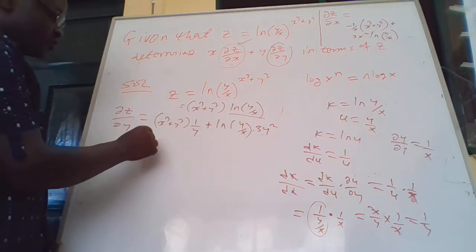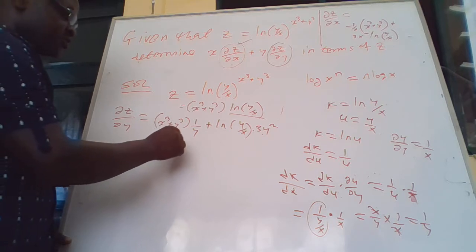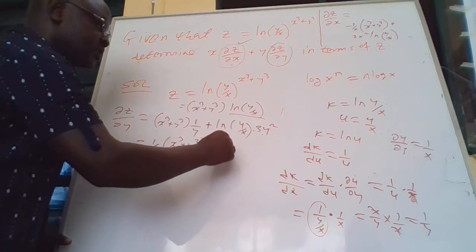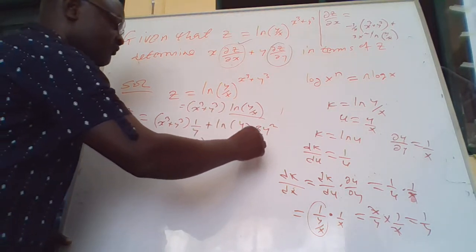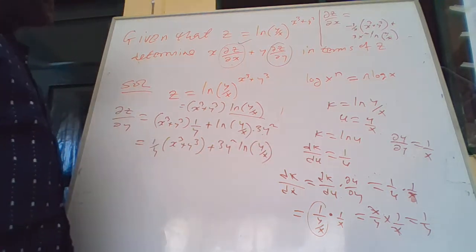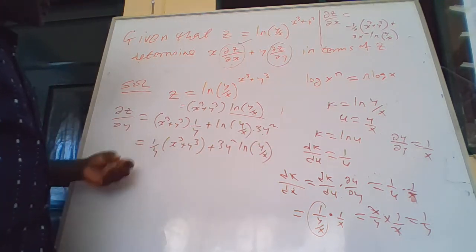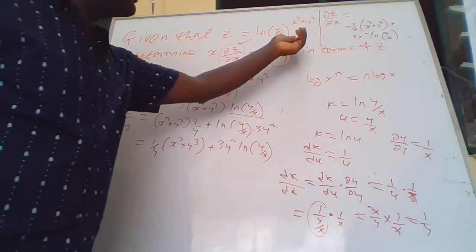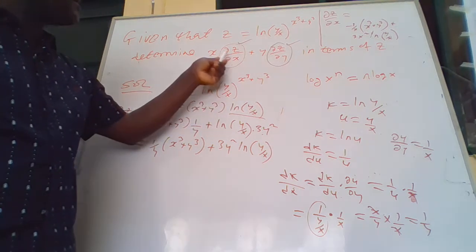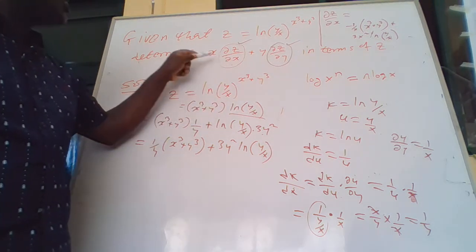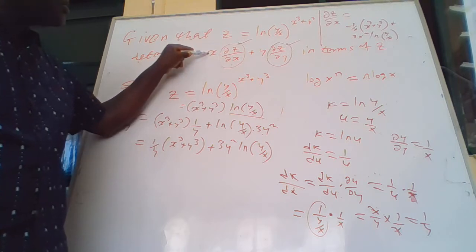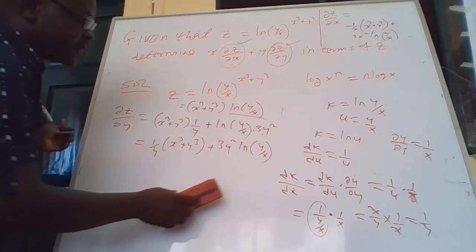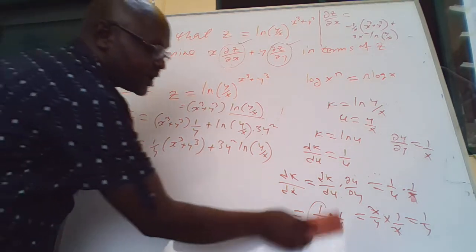Applying the product rule for ∂z/∂y: put down the first term (x³ + y³) and differentiate the second to get 1/y; then add the second term ln(y/x) times the derivative of the first which is 3y². So ∂z/∂y = (1/y)(x³ + y³) + 3y²·ln(y/x).